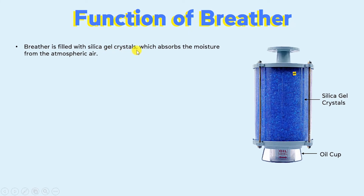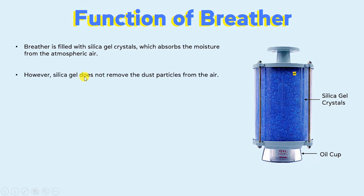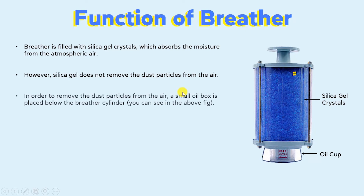Now let's discuss the function of breather. The breather is filled with silica gel crystals which absorb the moisture from the atmospheric air. As you can see in the diagram, these are the silica gel crystals which absorb moisture from the atmospheric air. However, one disadvantage of silica gel crystals is that they don't remove the dust particles from the air. In order to remove the dust particles, a small oil cup is placed below the breather cylinder.